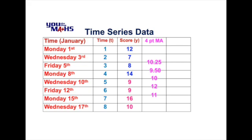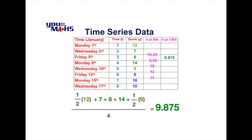What we see here is that with all the moving averages falling on the line in between the original scores — this is going to occur for any even-point moving average. So that we can get them to align with the original scores, what we'll do is center those moving averages. To determine the four-point centered moving average, we take the average of the first two averages — in this case the average of 10.25 and 9.50 — which gives us 9.875. Another way to do that without working out all the moving averages is to go back to the original scores and use a formula, which you can see on the screen with the numbers substituted.